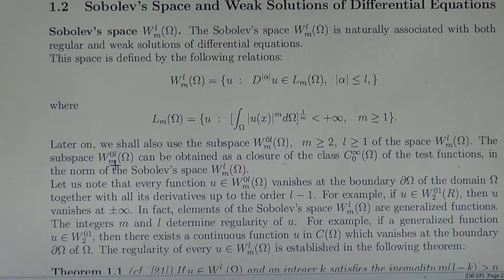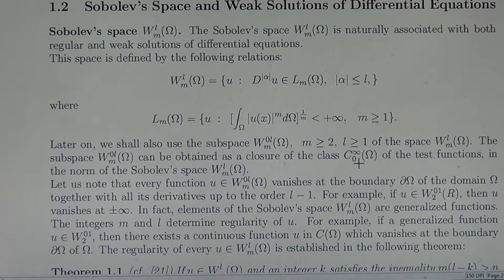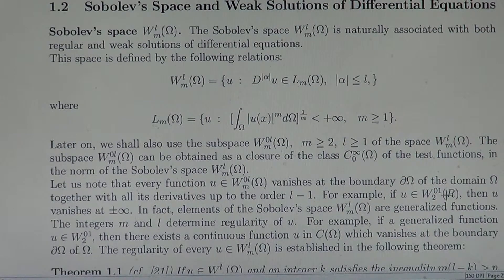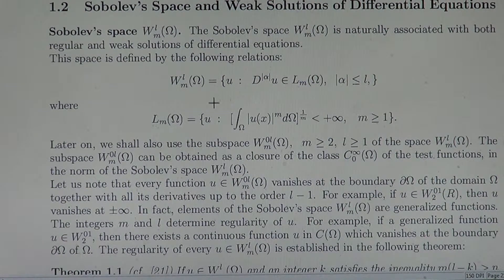The subspace W_0^L(Ω) can be obtained as a closure of the class of infinitely differentiable functions on Ω which vanish at the boundary — as a closure of test functions on Ω. Note that every function in W_0^L(Ω) vanishes at the boundary of the domain Ω together with all its derivatives up to order L minus 1. Here L is the order of differentiation of elements of W^L.